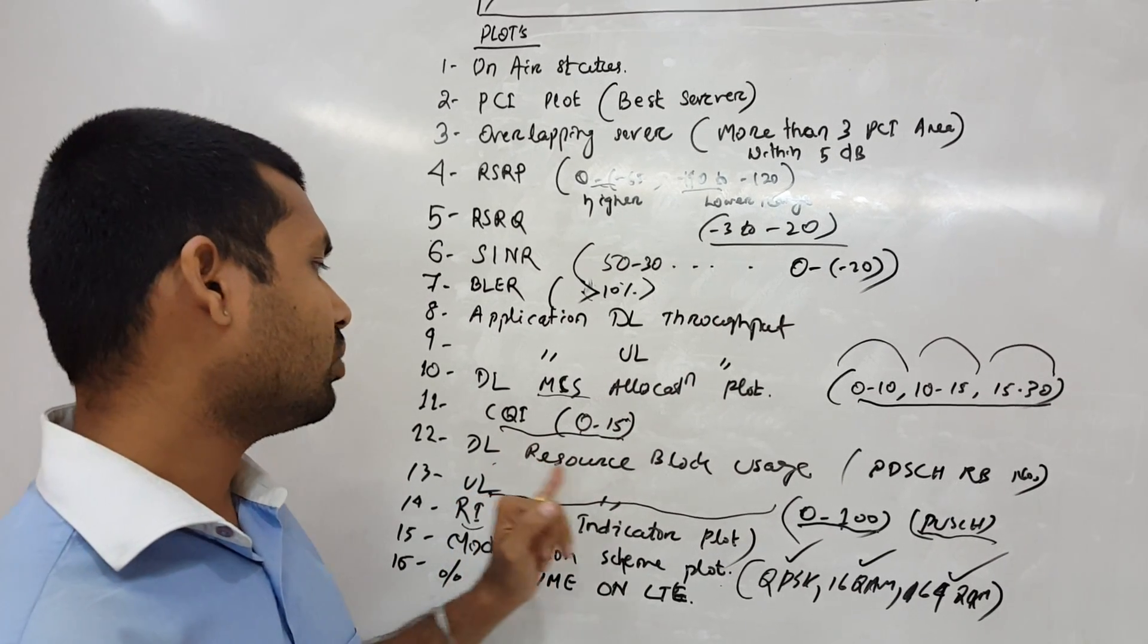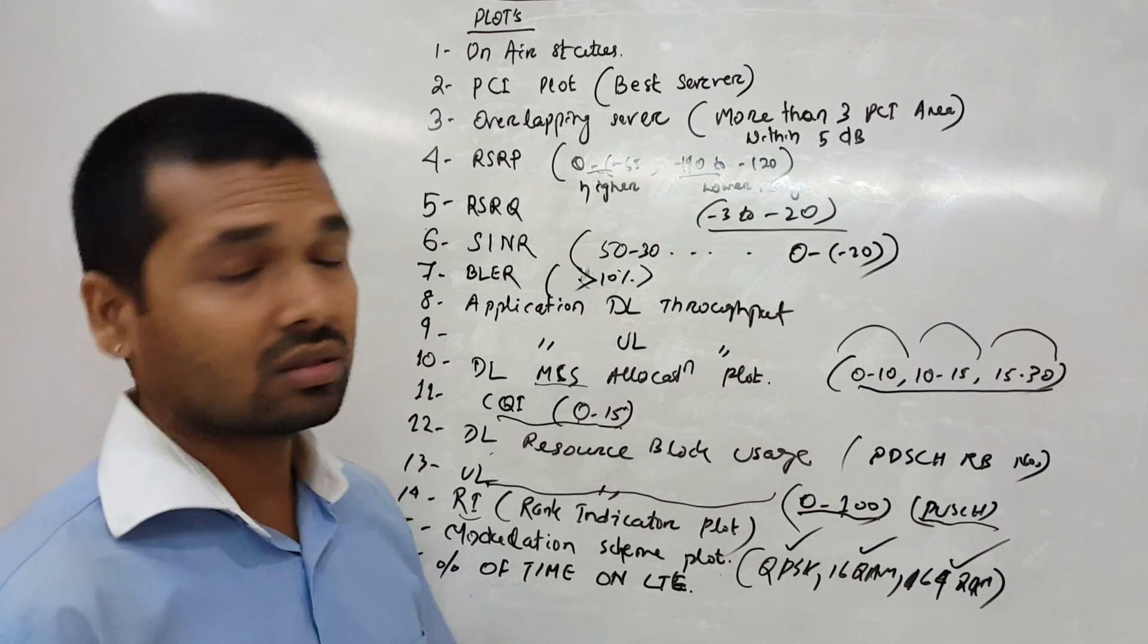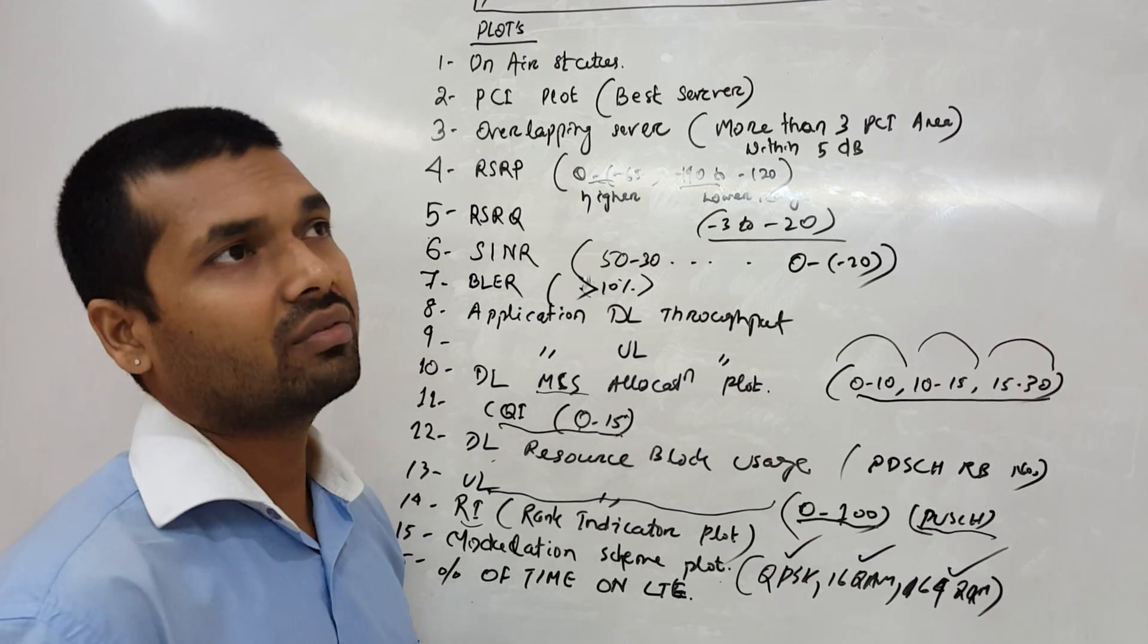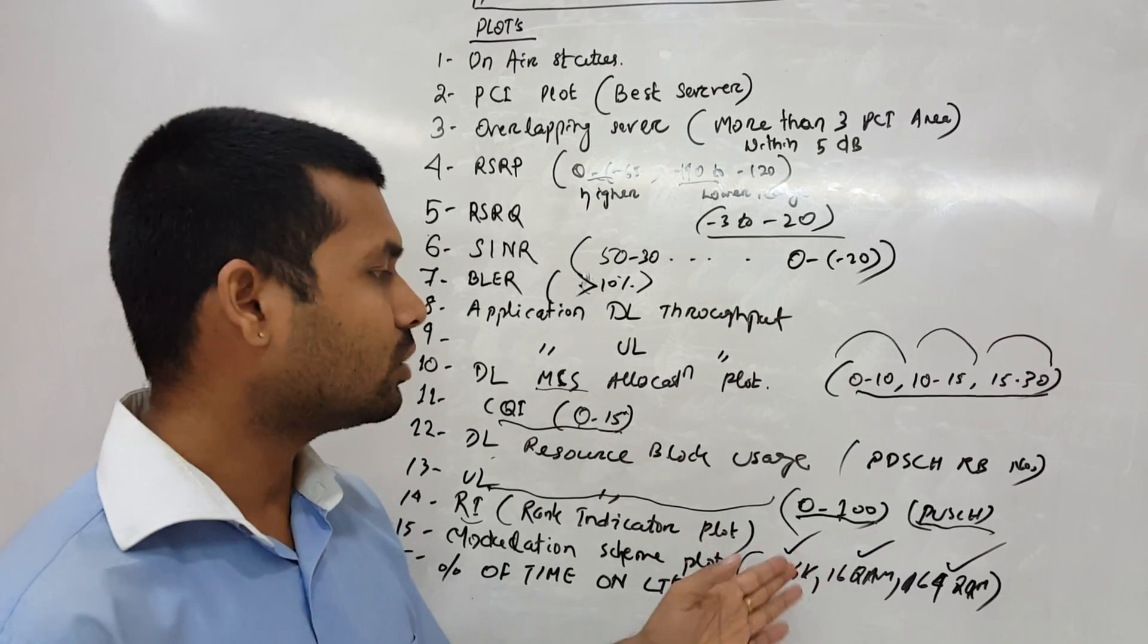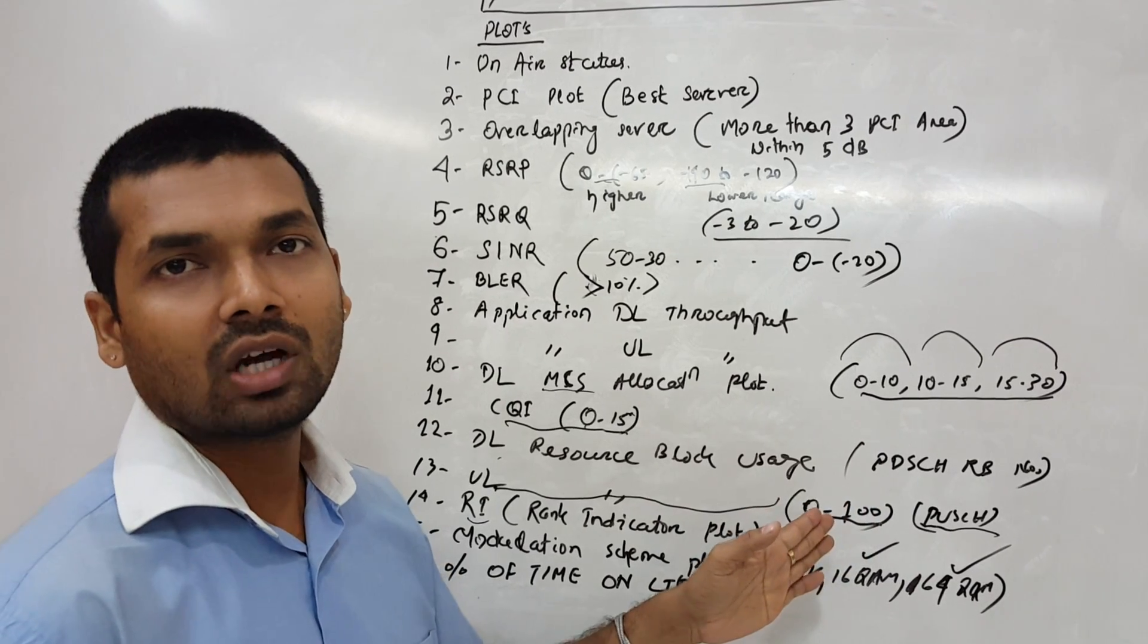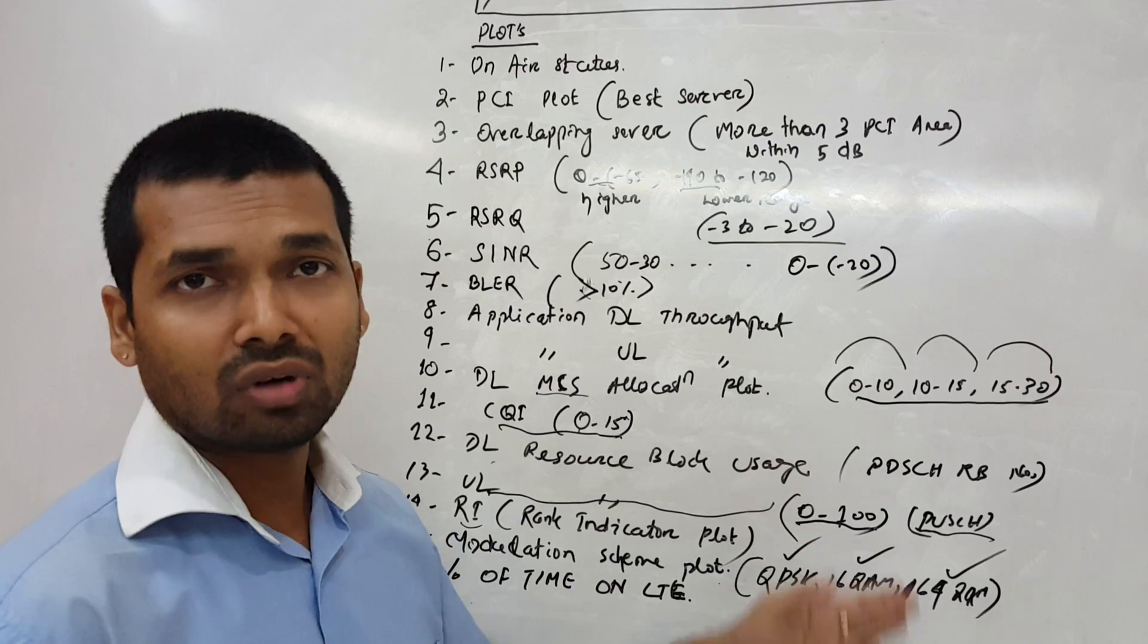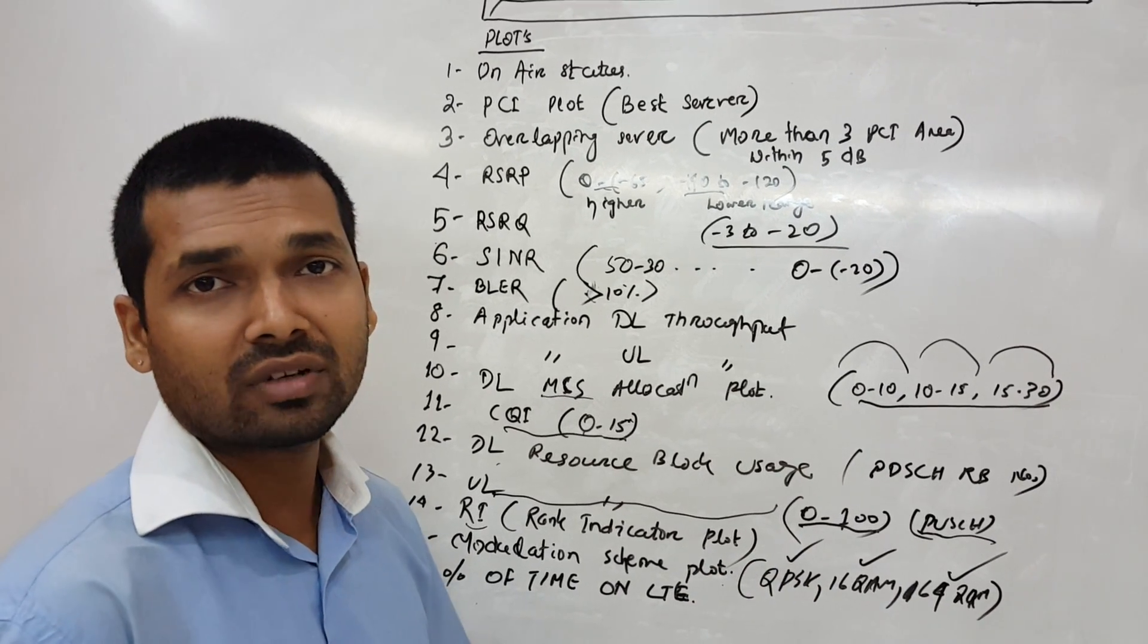Then downlink resource block usage - that is basically the physical downlink shared channel resource block. If you're having 5 megahertz spectrum, we have 25 resource blocks, so the value would be 0 to 25. If you're having 20 megahertz it's up to 100. If it's 15 then it would be 75, if it's 10 it would be 50. So accordingly it will vary according to your frequency allocations.